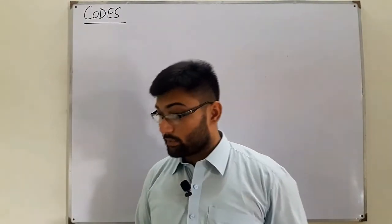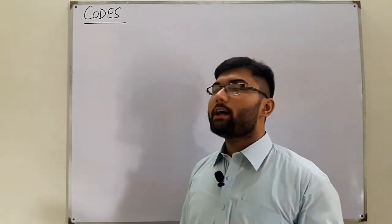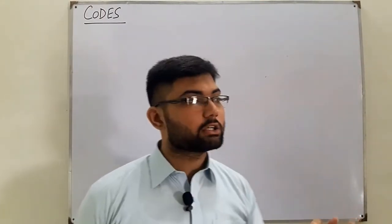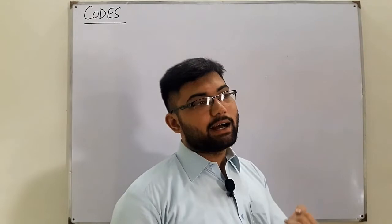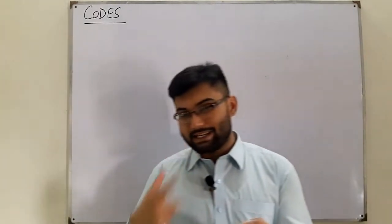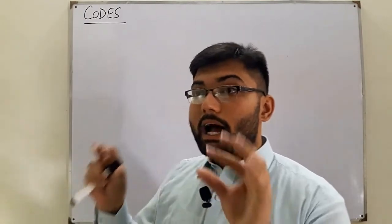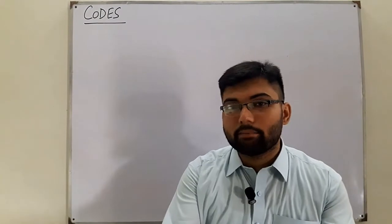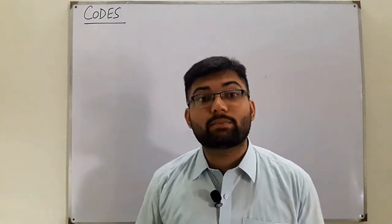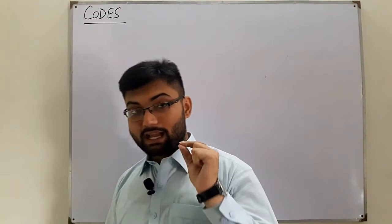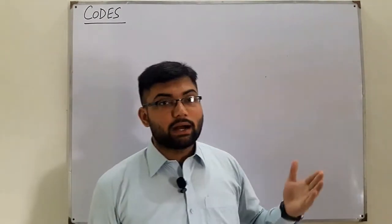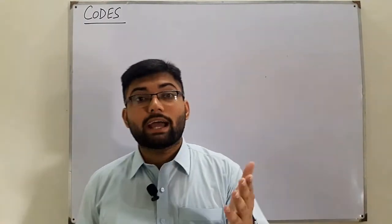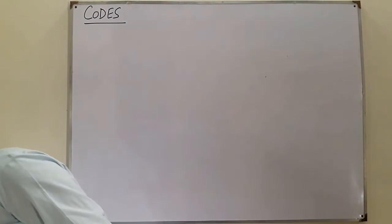Now, what is a code actually? A code is just a symbolic representation — it is a symbolic representation of anything. When we write numbers or alphabets or letters in terms of any particular symbols, any specific symbols, we say that this number or this letter, this alphabet, has been encoded. And that symbol is called a code.